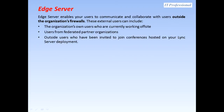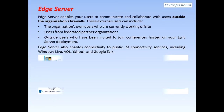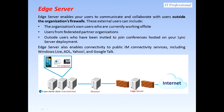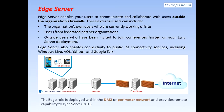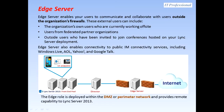For the edge server — it enables your users to communicate and collaborate with users outside the organization's firewalls. These external users can include the organization's own users who are currently working off-site, users from federated partner organizations, and outside users who have been invited to join conferences hosted on your Lync Server deployment. The edge server also enables connectivity to public instant messaging services including Windows Live, AOL, Yahoo, and Google Talk.